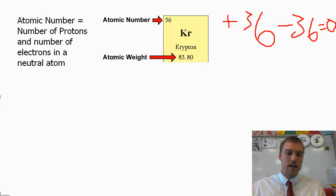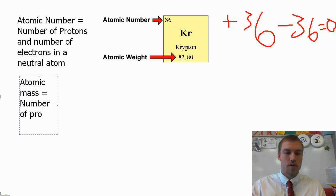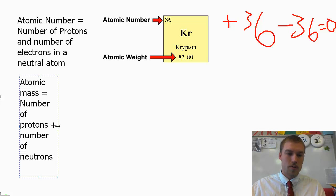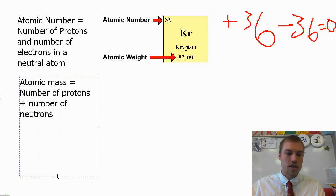We also have down here the atomic weight, also sometimes called the atomic mass. And our atomic mass is going to be equal to the number of protons plus the number of neutrons. And the reason why is because protons and neutrons each have a mass of 1,